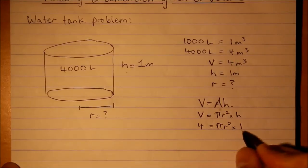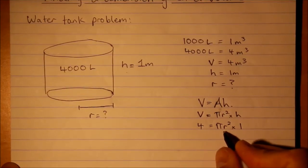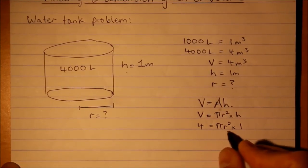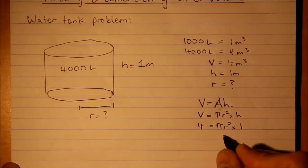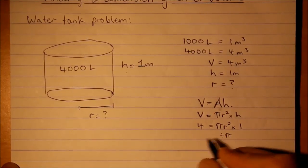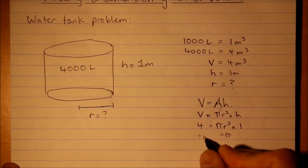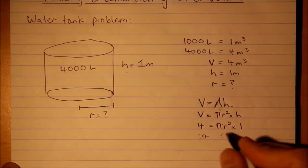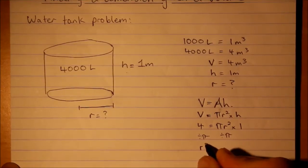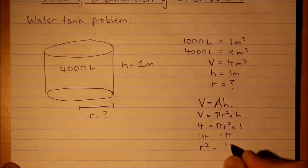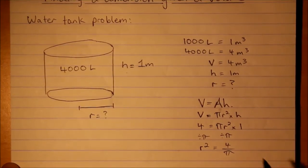Okay, so this simplifies but we just want to make r the subject here. So the one's going to disappear but we can divide both sides by pi. Now I'll just write the r squared on this side. 4 over pi.